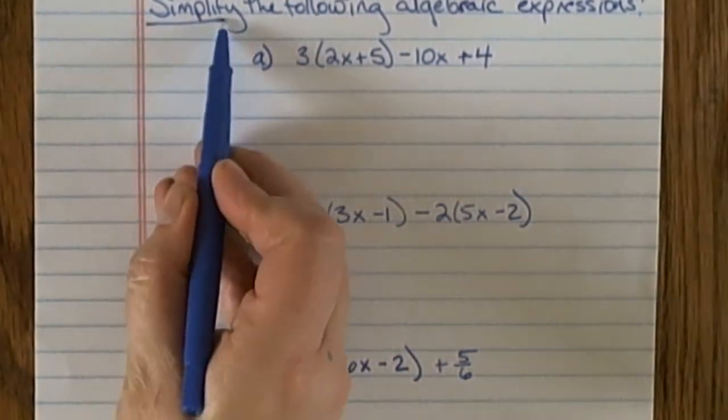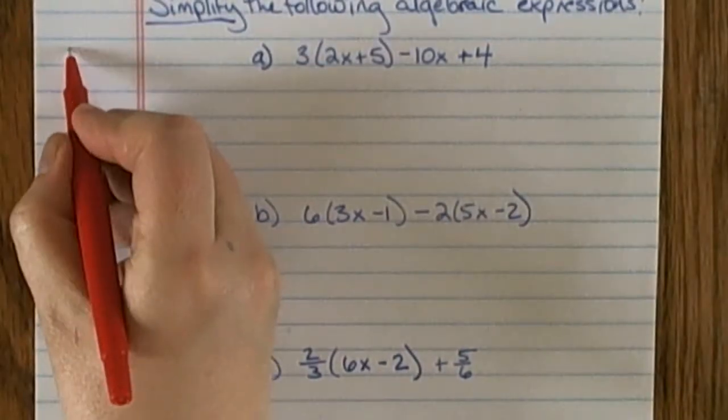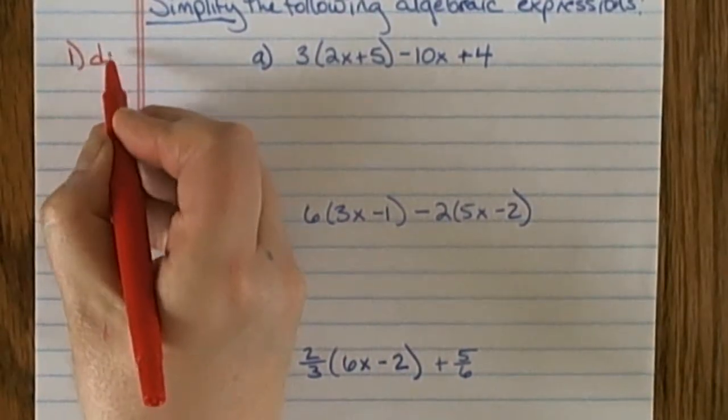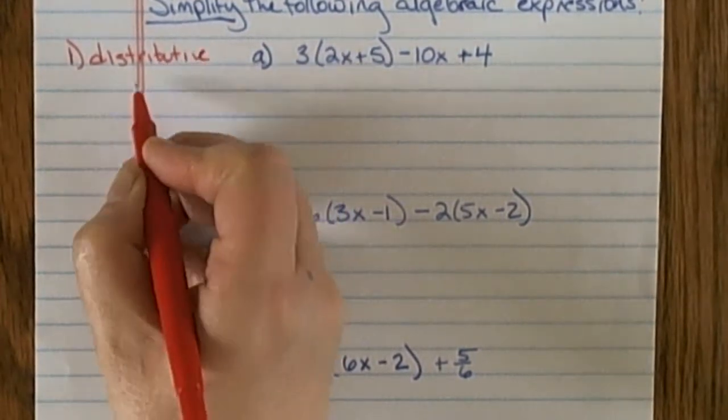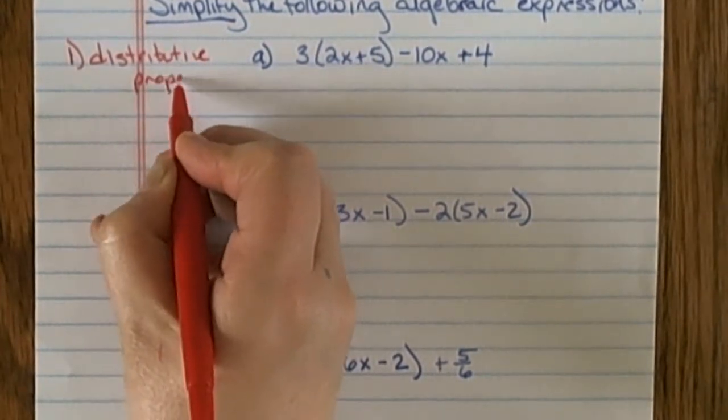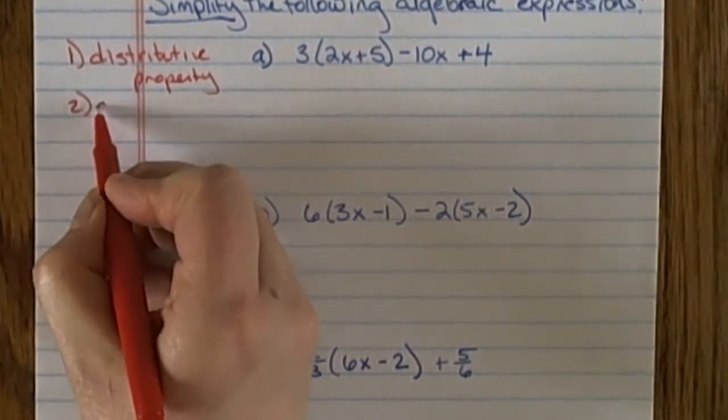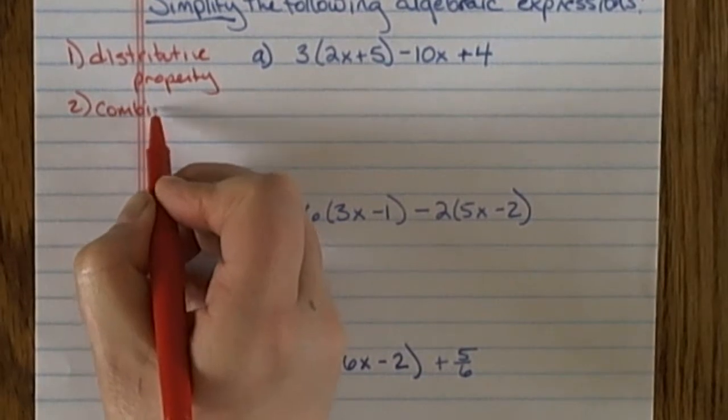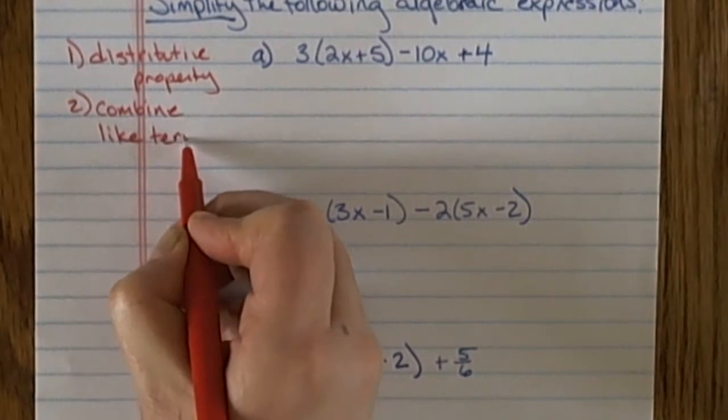When I see the word simplify, I think of two things I can do. One is apply the distributive property. The second thing I can do after using the distributive property is combine like terms. Like terms are terms that have the same variables to the same exponents.